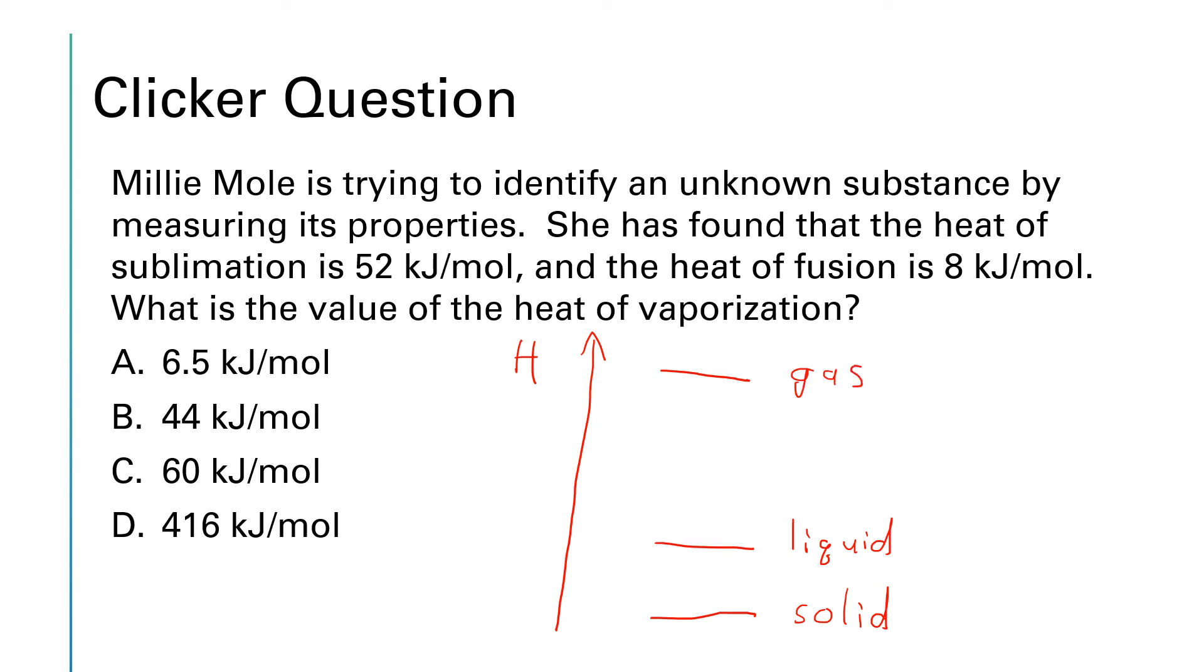Now when we're talking sublimation, which we know the delta H of sublimation is 52 kilojoules per mole, sublimation means that the solid turns into a gas. So we know that that change right there is 52 kilojoules per mole. Now we're also told that the heat of fusion is 8 kilojoules per mole. Heat of fusion means the solid turns into a liquid. So that increment right there is 8 kilojoules per mole. So we're asked to find the heat of vaporization, which would be for the liquid to turn into the gas. So that would be delta H of vaporization.